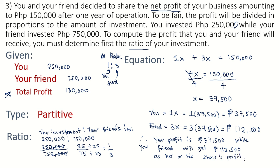Therefore, your profit is 37,500 pesos while your friend will get 112,500 pesos as their share of the profit. Hopefully you now fully understand the different kinds of proportion. Once you determine the kind of proportion, you can always use the guide to form your proportion or equation to solve for the unknown. Thank you.